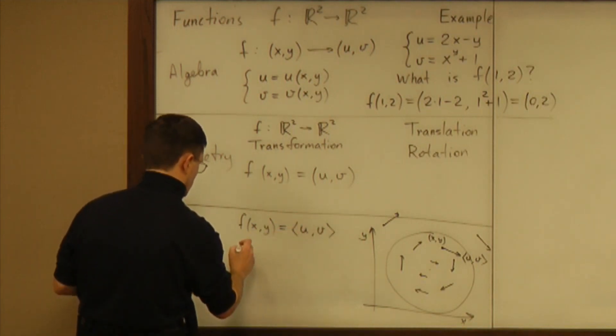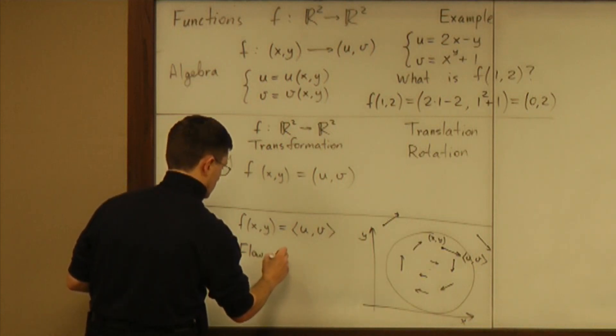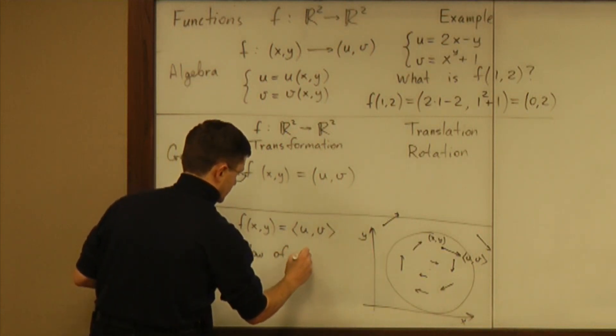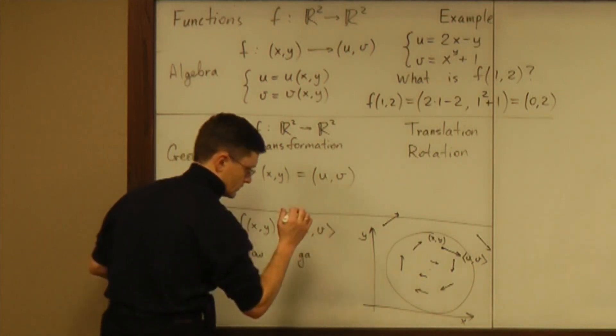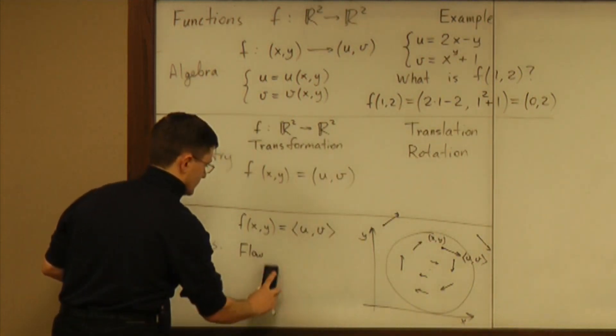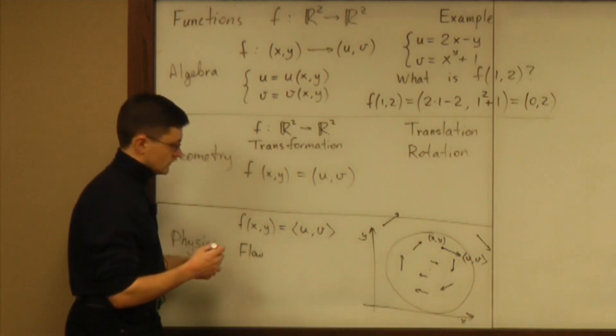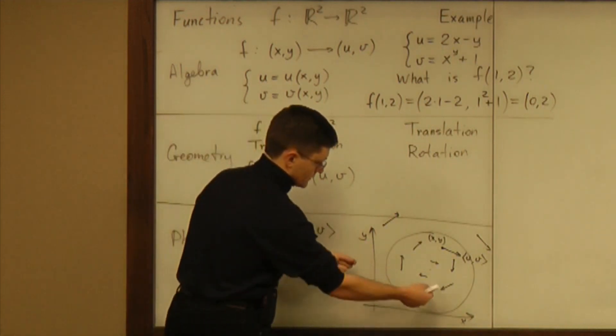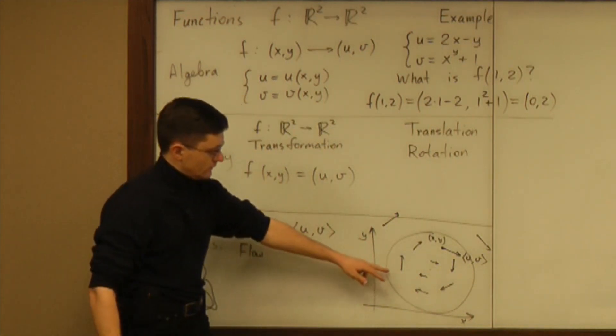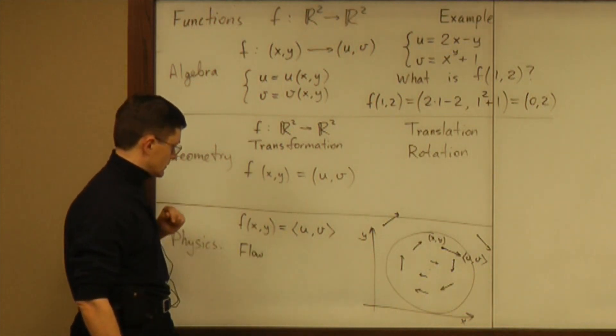So how do we think about it? We think about it as a flow of, let's say, gas - let's just think about flow of something. So some media is moving and as every point moves we consider the velocity vector attached to that point.